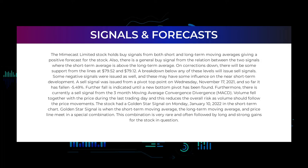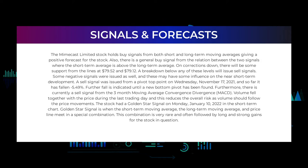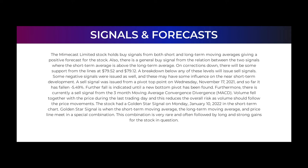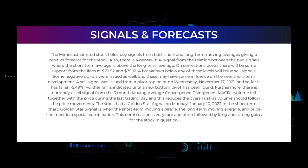Some negative signals were issued as well and may have some influence on near short-term development. A sell signal was issued from a pivot top point on Wednesday November 17th, 2021, and so far the stock has fallen minus 5.49%. Further fall is indicated until a new bottom pivot has been found. There is also currently a sell signal from the three-month moving average convergence divergence (MACD). However, the stock had a golden star signal on Monday January 10th, 2022 — a very rare combination of short-term moving average, long-term moving average, and price line often followed by long and strong gains.